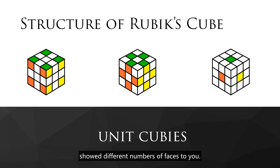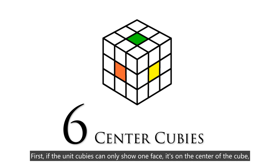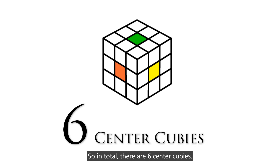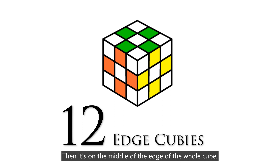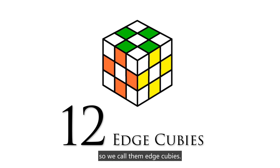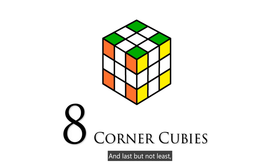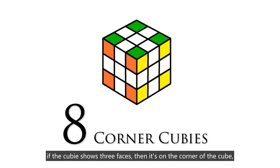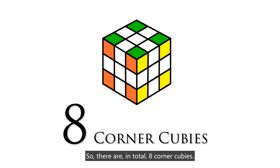You can observe that different unit cubies show different numbers of faces to you. First, if the unit cubie only shows one face, then it's on the center of the cube — so we call them center cubies. In total, there are 6 center cubies. Similarly, if the cubies show 2 faces, then they're on the middle of the edge of the whole cube — so we call them edge cubies, and there are 12 edge cubies. And last but not least, if the cubie shows 3 faces, then it's on the corner of the cube — so we call them corner cubies, and there are 8 corner cubies.